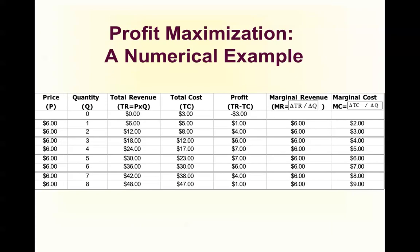This is Section 2 of Chapter 14 in Gregory Mankiw. We're looking at a big table that shows price, quantity, total revenue, total cost, profit, marginal revenue, and marginal cost.